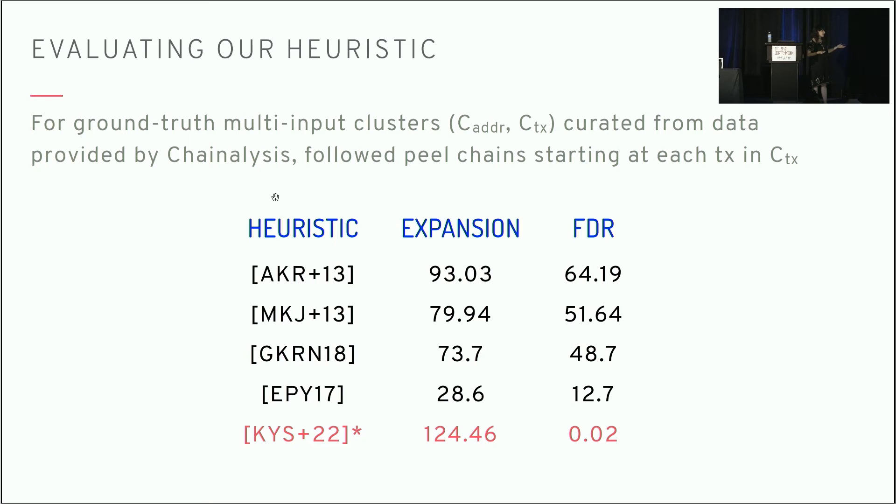Our heuristic, on the other hand, did much better than we expected. Not only is it incredibly safe, achieving a false discovery rate of 0.02, it's also the most effective one in terms of actually expanding the clusters. It's the most effective and, by several orders of magnitude, the most safe.